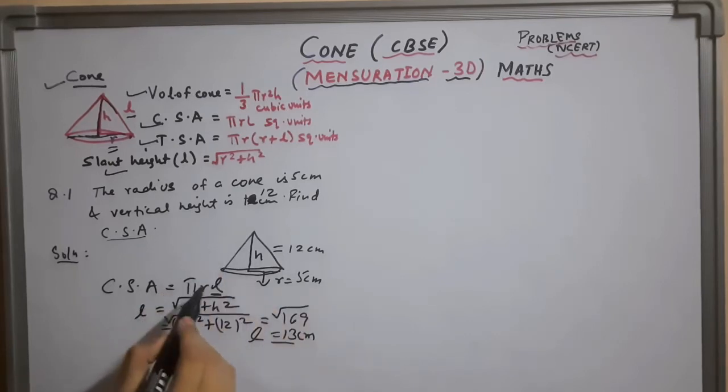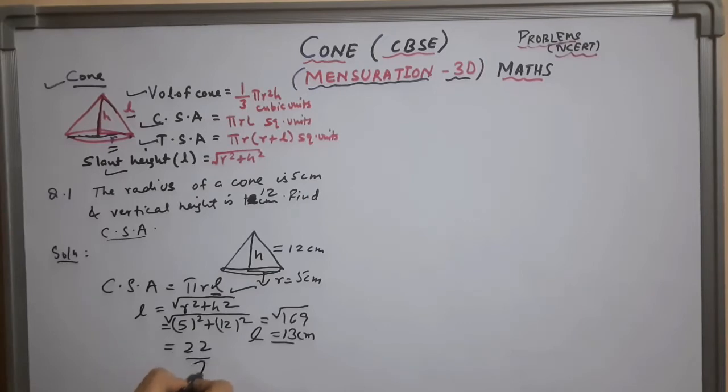Now putting the value of l in this formula of curve surface, we have pi is 22 by 7 into r 5 into l 13.